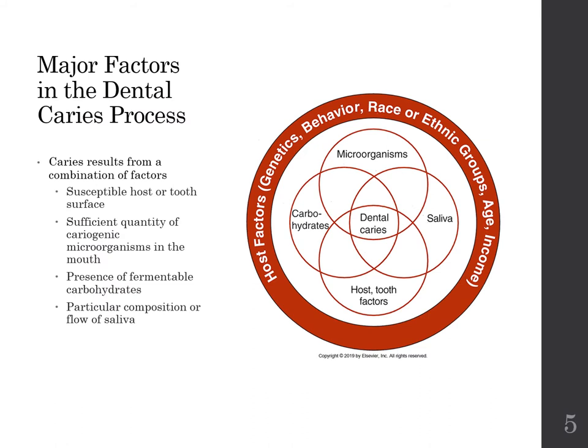The major factors in the dental caries process are four things, and it has to be a combination: a susceptible host or tooth surface, a sufficient quantity of cariogenic microorganisms in the mouth, the presence of fermentable carbohydrates, and a particular composition or flow of saliva. When one or more of these links in this Venn diagram is insufficient, the caries process is given a foothold. This works the same way as infection control — susceptible host, enough microorganism, virulence, and a vector. You'll see this image on page 352 in your book.